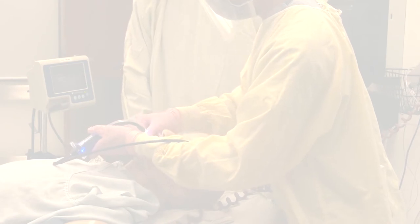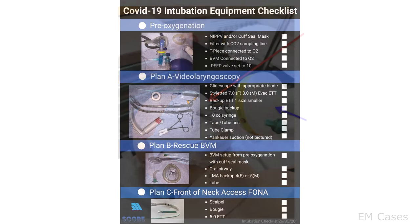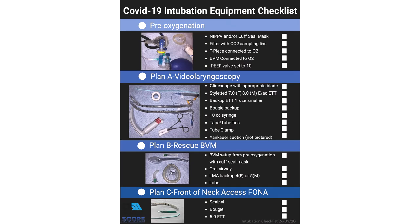The overall recommendation is to use video laryngoscopy. The reason for this is because it allows you to stay further away from the patient's face, and it allows for less movement of the intubator, which some may perceive as safer. Your first line should be what is going to maximize your chance of first pass success. For your plans B and C, consider a supraglottic device with a mask with a hole in it and a viral filter, potential for a surgical airway, and bag mask ventilation in between your attempts.